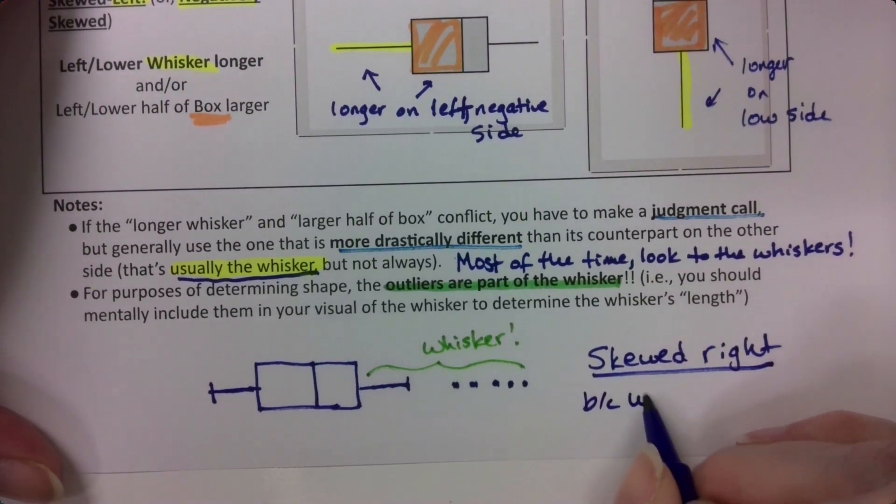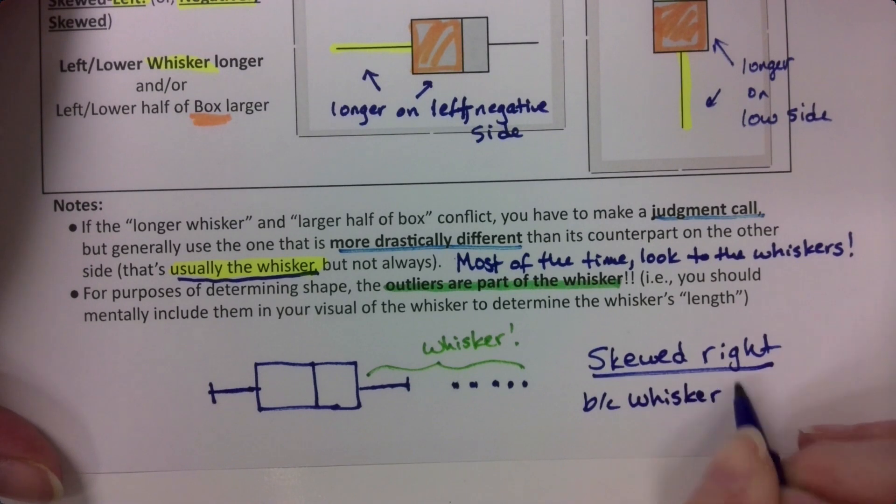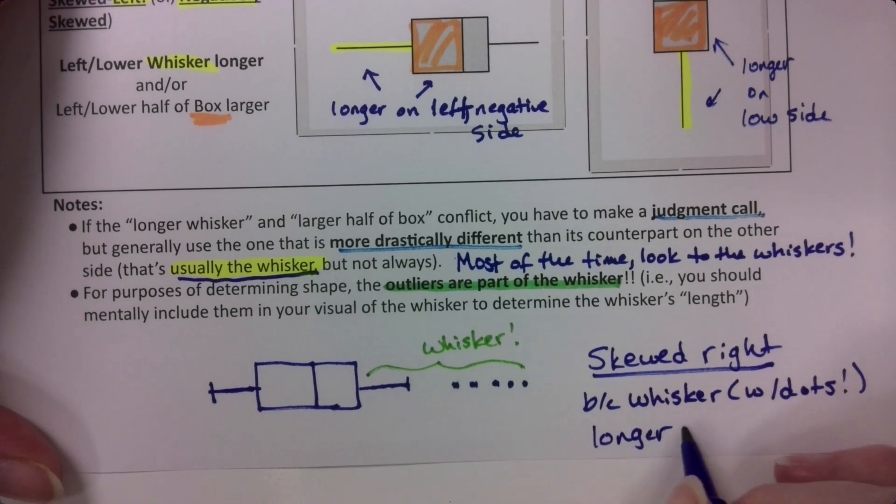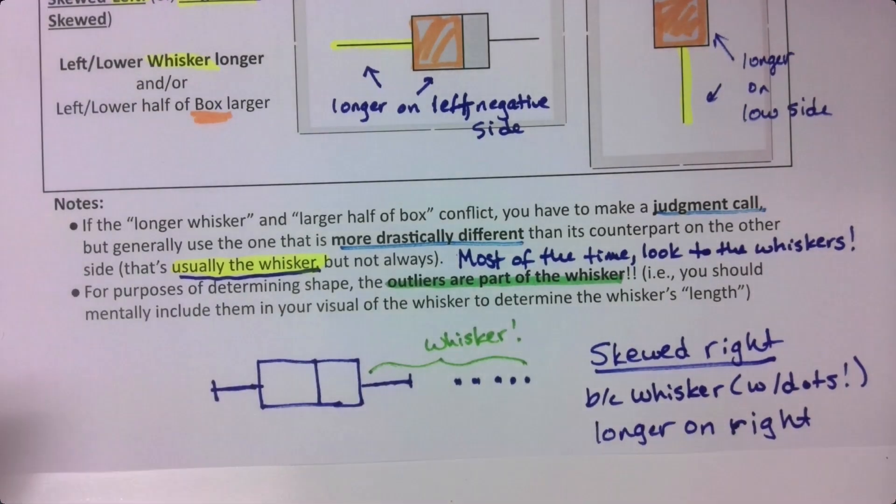Because the whisker, with dots, is longer on the right. The whisker wins, and the dots are part of the whisker. Never forget.